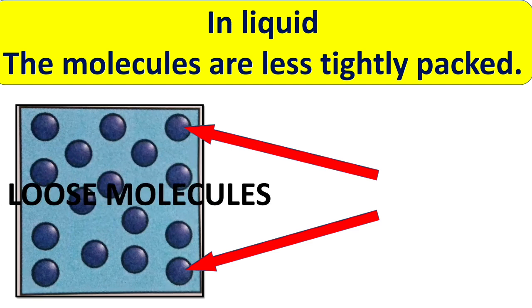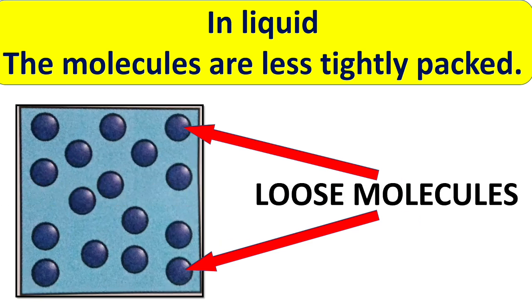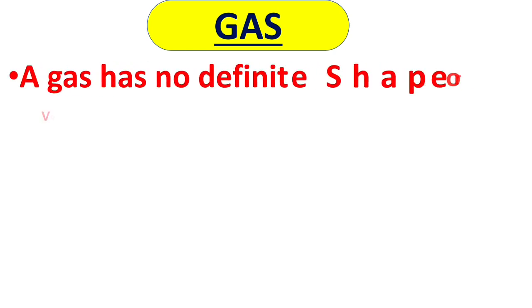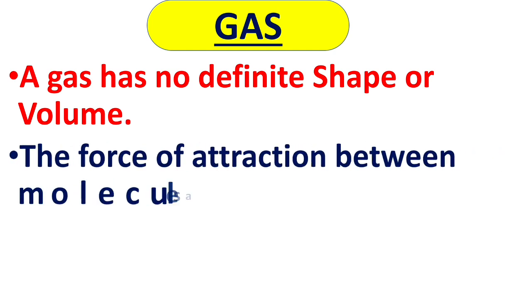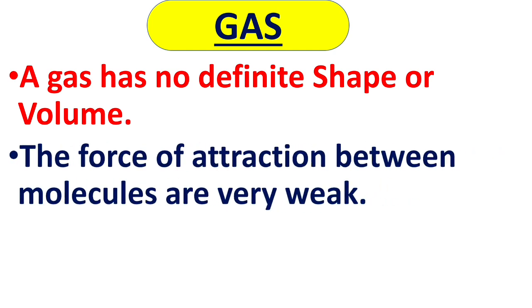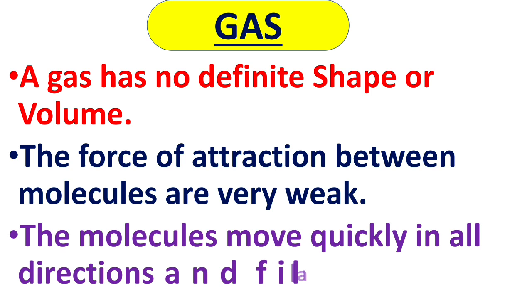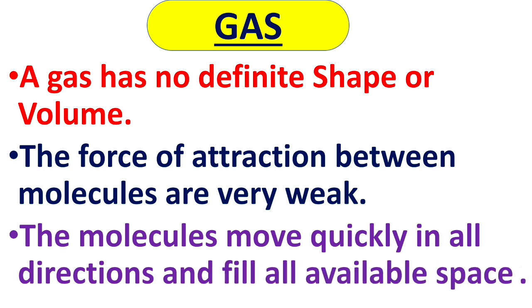The molecules are less tightly packed. Next is gas. A gas has no definite shape or volume. The force of attraction between molecules is very weak. And because of this, the molecules move quickly in all directions and fill all available space.